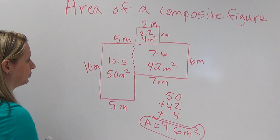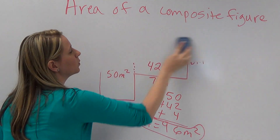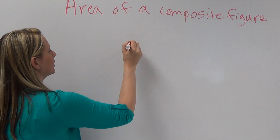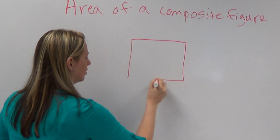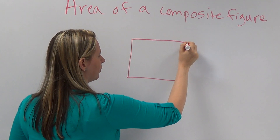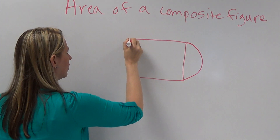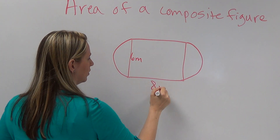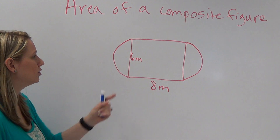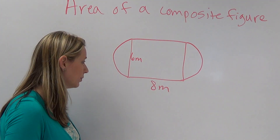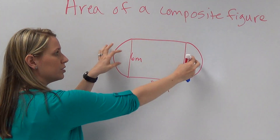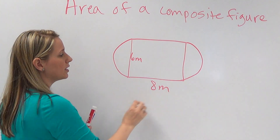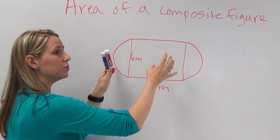Let me show you another one — let's say we had something that wasn't quite as simple to see. Here we have two semicircles and a rectangle. If you put these two semicircles together, you get one circle, and then you've got a rectangle in the middle. So we need to take the area of the rectangle and the area of the circle, which would be the two semicircles put together.